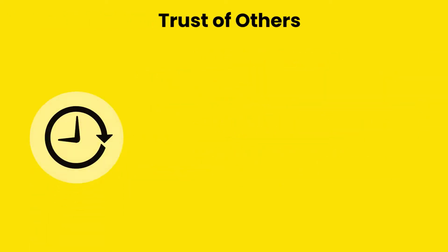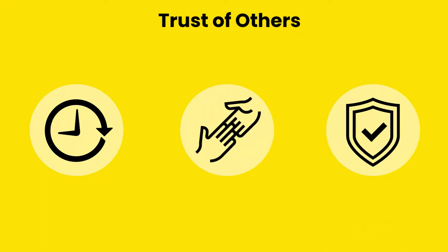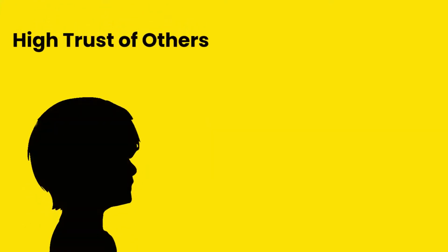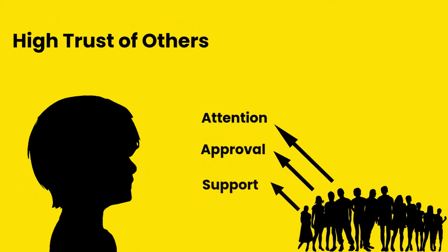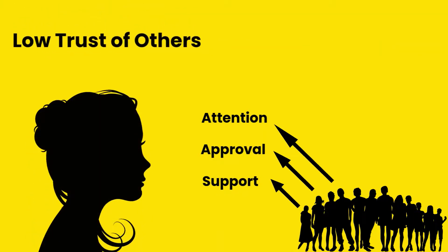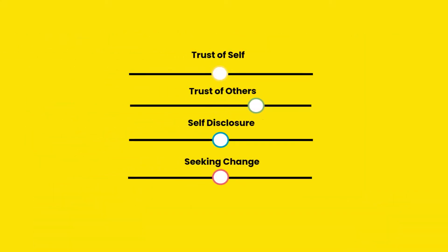Trust of others relates to how available, supportive and reliable you anticipate others to be. Those with a high trust of others assume that people will give them attention, approval and support. Those with a low trust of others assume they won't. Again, those who can steer optimally adjust their trust of others depending on the context.